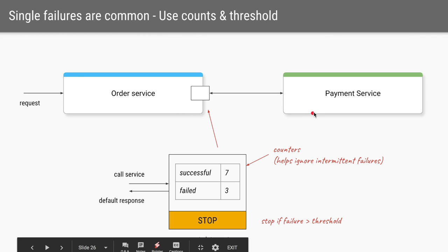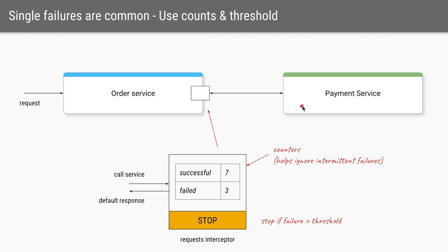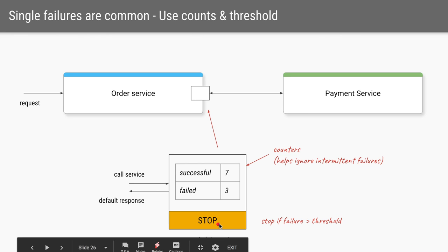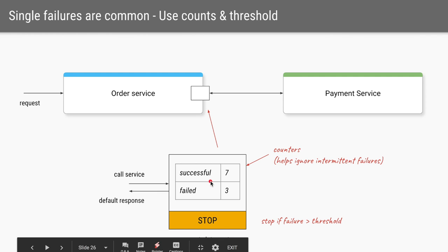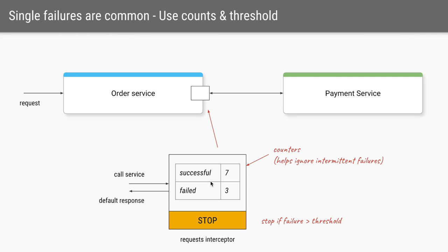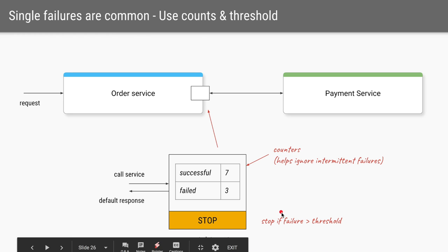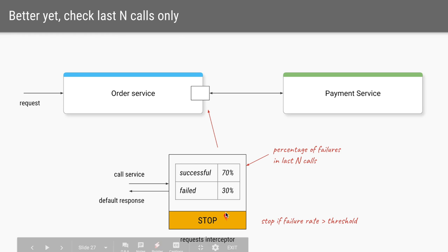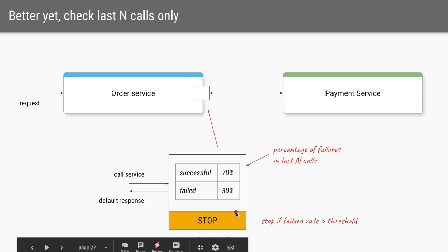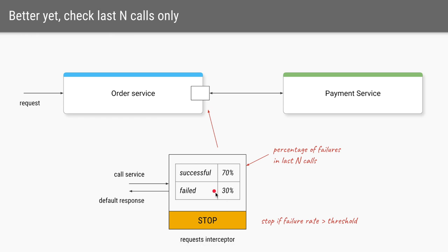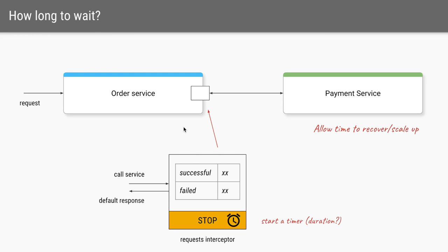We should not immediately change the status to stop on a single failure, because intermittent failures are common in distributed systems. Instead, the interceptor keeps a count of requests that have succeeded and failed. If the number of failures exceeds a certain threshold, then we change the status from allow to stop. An even better approach is to track the percentage of failed calls — for example, tracking the last 100 or 50 calls and changing the status only if more than 25% have failed.